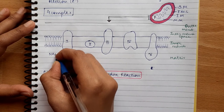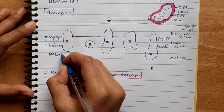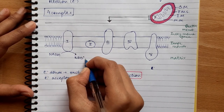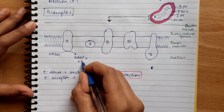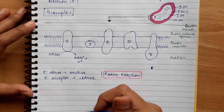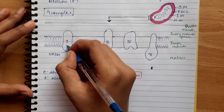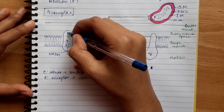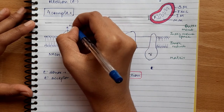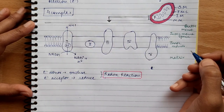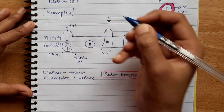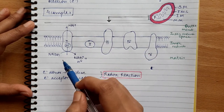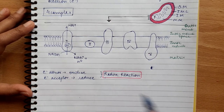Let's go to Complex 1. What happens in Complex 1? NADH is converted to NAD⁺ plus H⁺ ions. NADH undergoes oxidation, meaning two electrons are removed, and 4 H⁺ ions are pumped into the inter-membrane space by Complex 1.